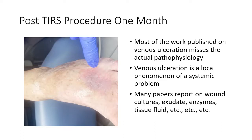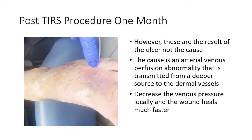Venous ulcerations occur in the dermal area because of transmitted pressure. If you can block that transmitted pressure at the dermal area, the wound will heal, regardless of what you do afterwards. In my opinion, the cause of venous ulcerations is an arterial-venous perfusion abnormality that is transmitted from a deeper source to the dermal vessels. You have high pressure in the dermal vessels and an alteration of the AV perfusion. Any small injury can cause a skin breakdown with ulceration.